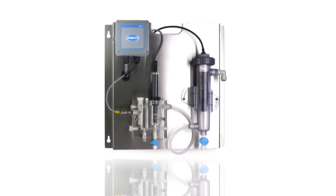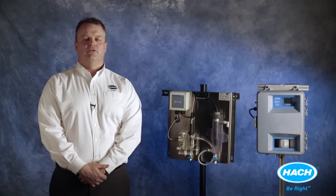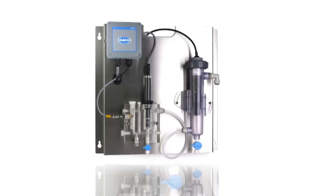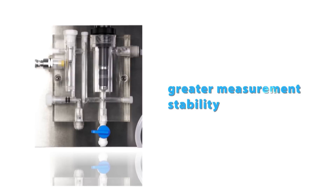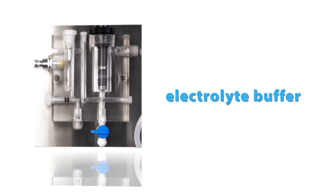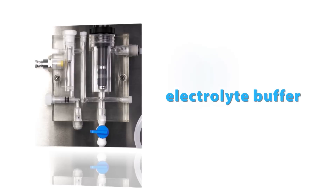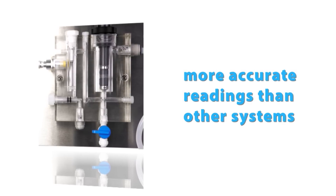Amperometric chlorine analyzers were approved for online analysis of chlorine under US EPA method 334.0 in 2009 after release of the groundwater rule. Unlike many amperometric systems on the market, the CL10 contains a three-electrode sensor which provides greater measurement stability. This instrument also uses electrolyte buffer to convert all chlorine species to a form detectable by the sensor, which gives a much more accurate reading than other systems using simple mathematical pH correction.